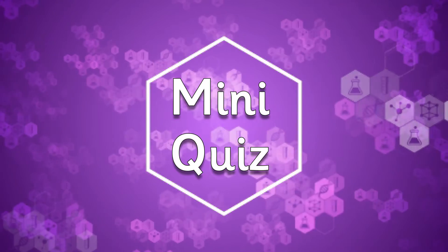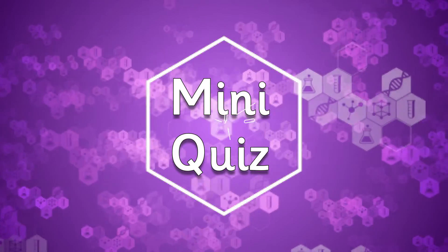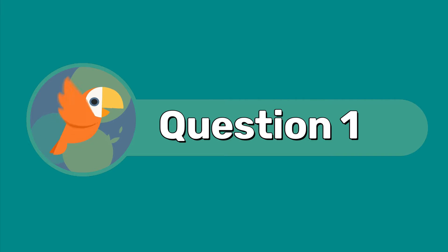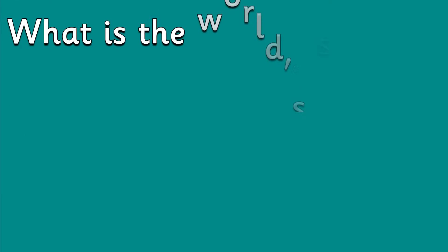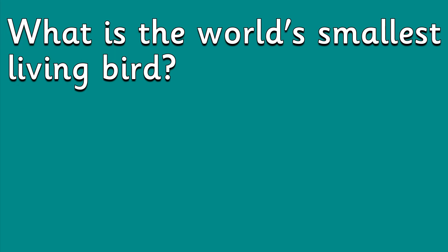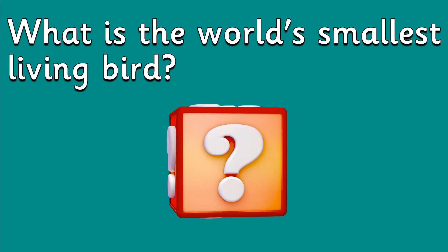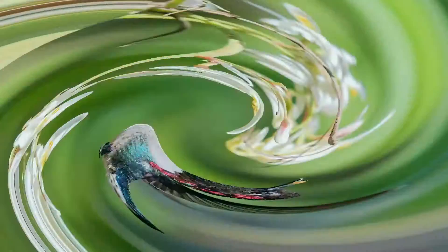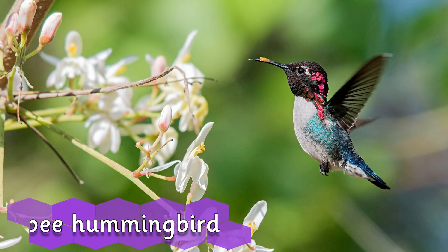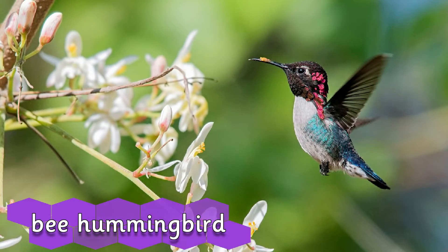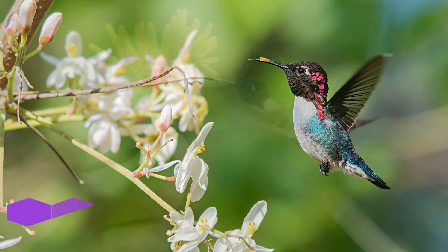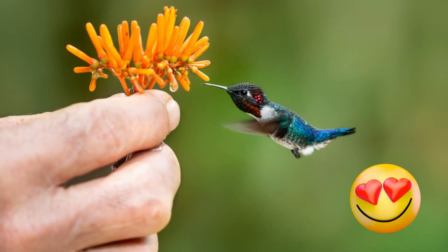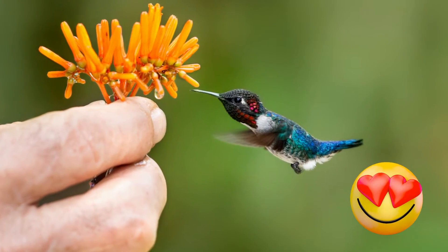Now it's time for a mini quiz. Question 1: What is the world's smallest living bird? It is the bee hummingbird, which is just over two inches tall. That's five and a half centimeters.